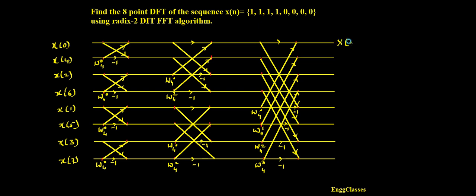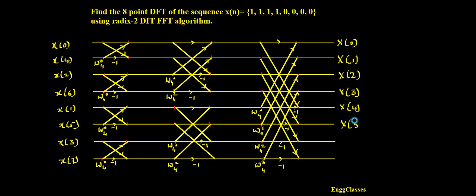The output is: capital X[0], X[1], X[2], X[3], then X[4], X[5], X[6], and lastly X[7].